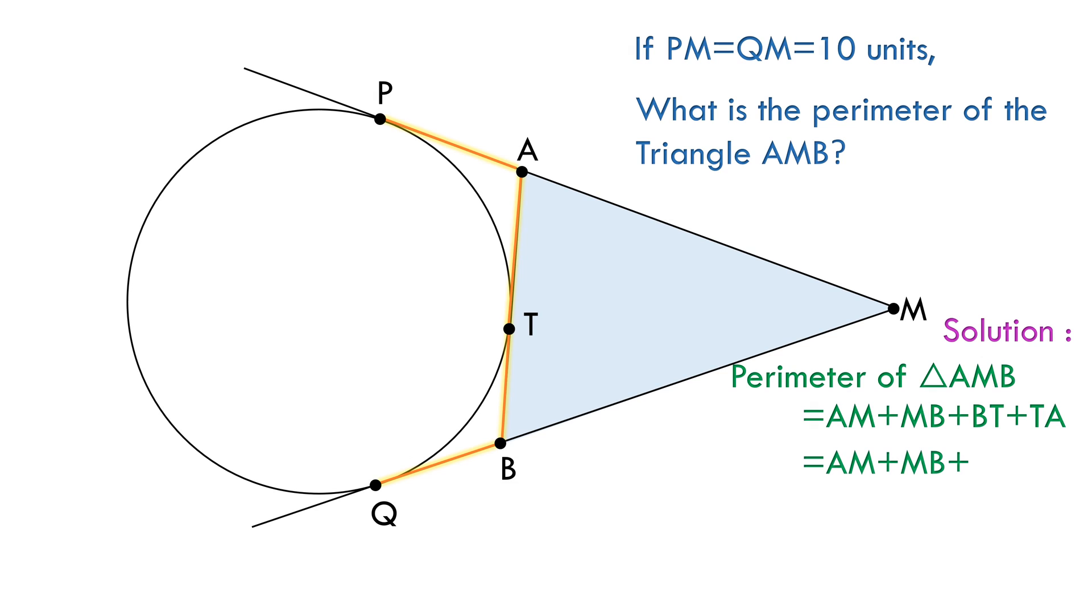We can replace BT with QB and TA with PA as said. We must be clever to see that PA plus AM makes PM and QB plus MB makes QM. So the perimeter of the triangle equals PM plus QM equals 10 plus 10 units equals 20 units.